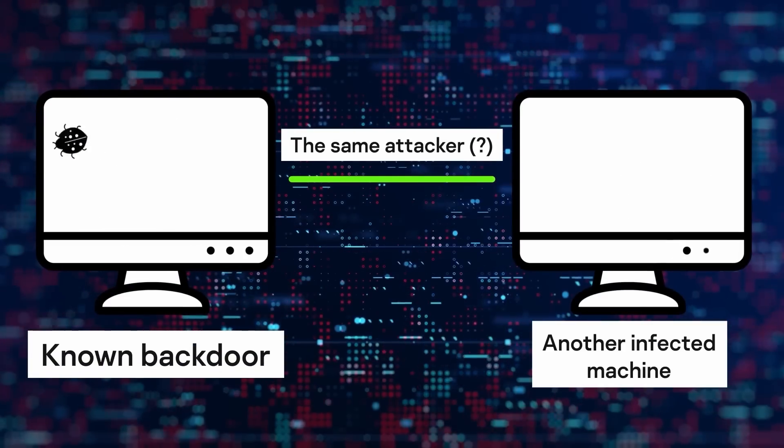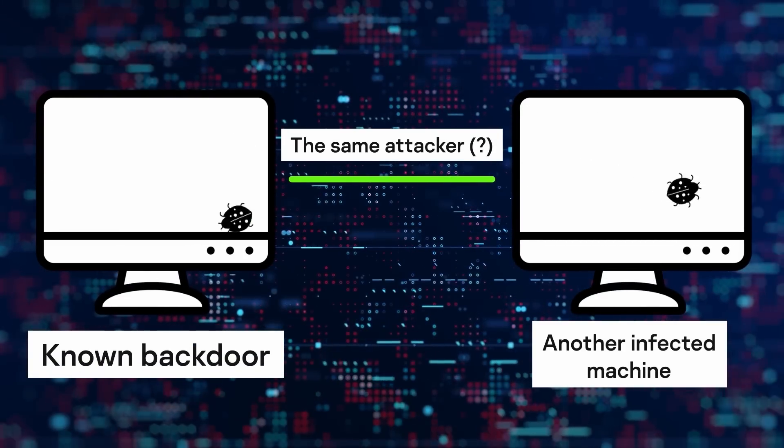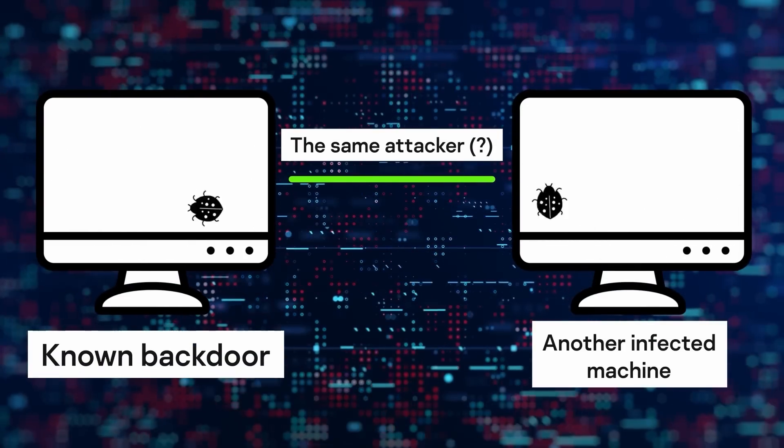In order to achieve technical attribution, we look at a number of things, such as the tools that are used by the attackers. For example, if we find a backdoor on a victim machine that we know is only used by a single actor, and we find this same backdoor later on another machine, then it stands to reason that the attacker involved in the second attack was probably the same one as in the first. This is one way that we can connect those types of incidents together.